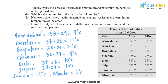For sub-part one, the city with the largest difference is Jammu, with 15 degrees Celsius. For sub-part four, the city with the least difference is Mumbai, with only 5 degrees Celsius difference between maximum and minimum temperature.